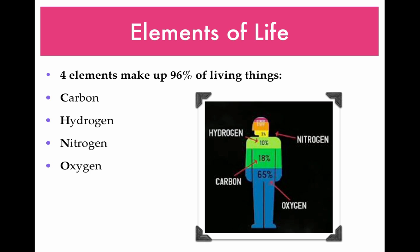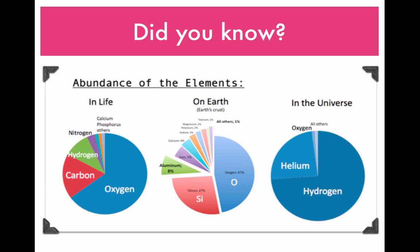If so, you might as well buy a lottery ticket because you've gotten them all correct. Those are the 4 elements that make up 96% of all living things. This here is just a breakdown of the elements that you can find in life, on earth and in the universe.